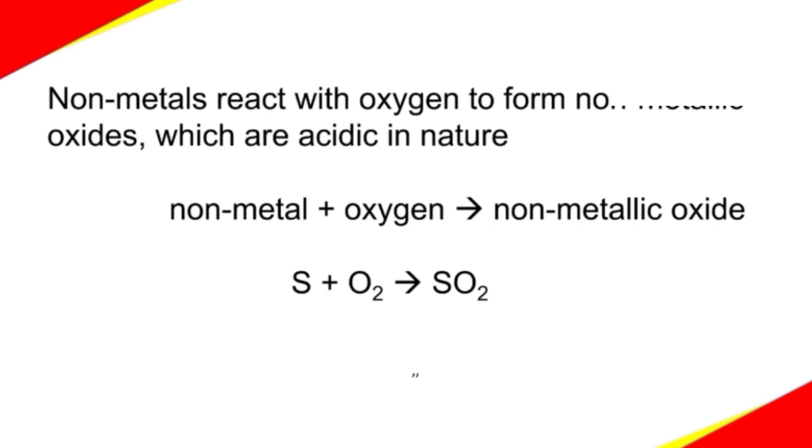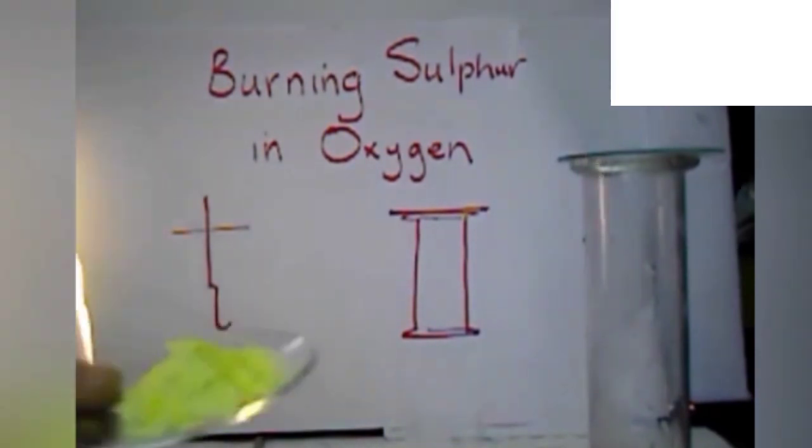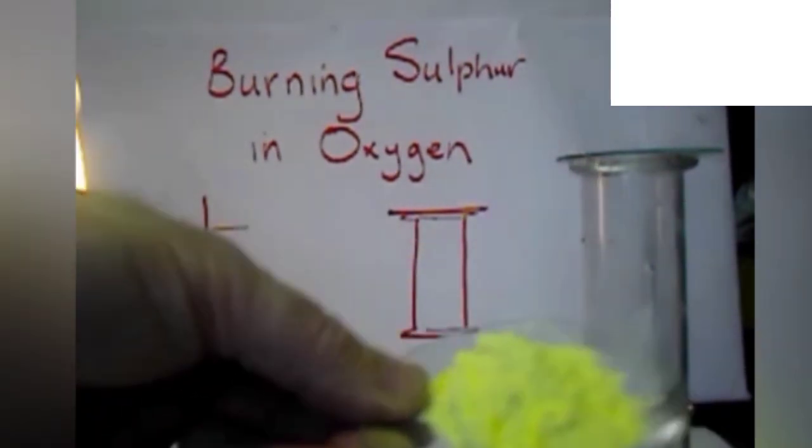Coming to non-metals. Non-metals react with oxygen to form non-metallic oxides. These non-metallic oxides, when dissolved in water, form acids. Hence, these are acidic in nature. Let us start an experiment to see what happens when sulfur burns in oxygen. This is how a sulfur powder looks like. A bright yellow colored powder.